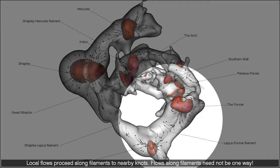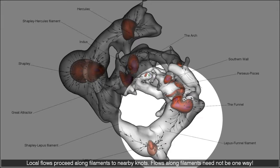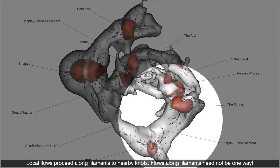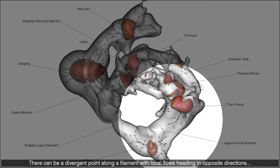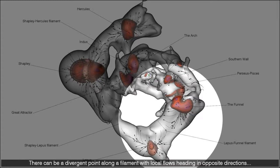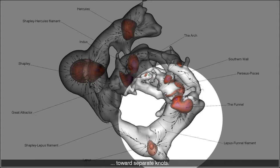Local flows proceed along filaments to nearby knots. Flows along filaments need not be one way. There can be a divergent point along a filament with local flows heading in opposite directions towards separate knots.